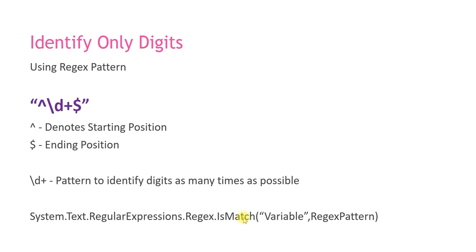If the input contains any alphabets or symbols other than 0 to 9, it will return false. By that way you can conclude whether the input variable contains only digits or any other alphabets or symbols.